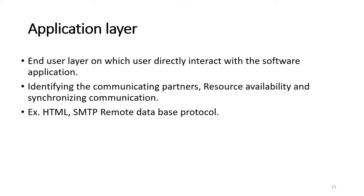The application layer is the end user layer — it directly interacts with the software application. Whatever data the user sees on the receiver side is at this layer. It also handles deciding resource availability, identifying the communicating partner, synchronization, and encryption algorithms. Examples include HTML and SMTP protocols. In automotive terms, SOME/IP is a main application layer protocol.